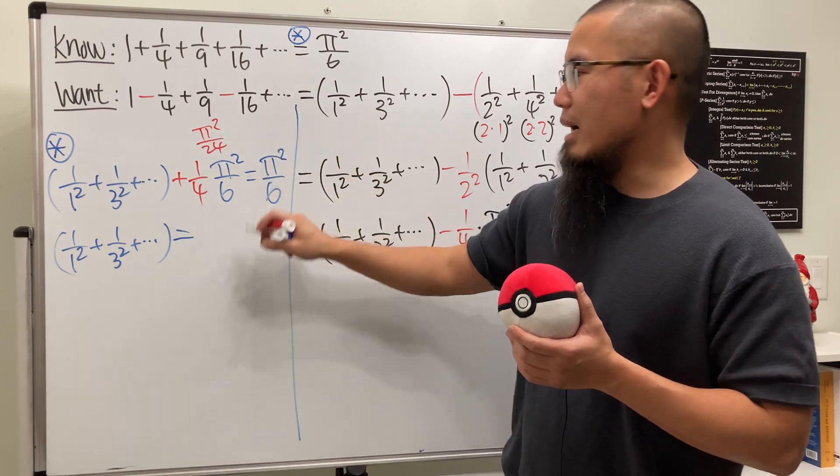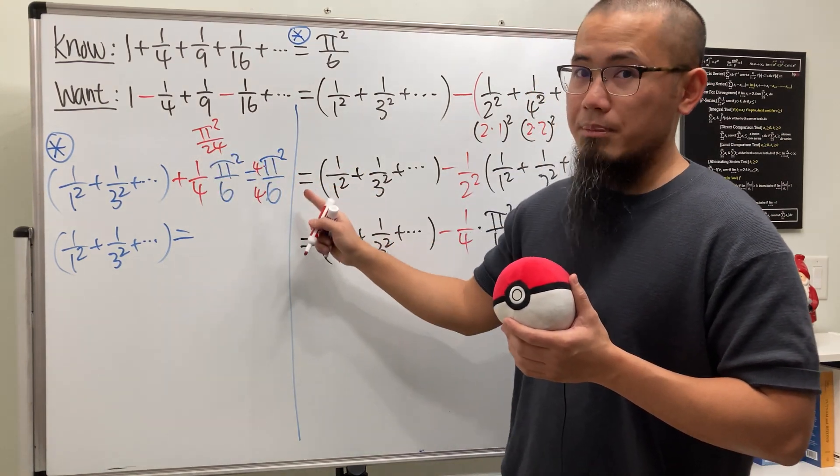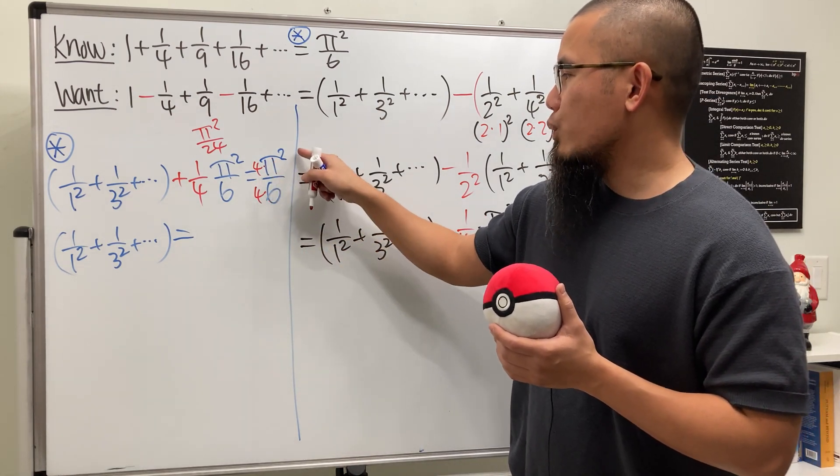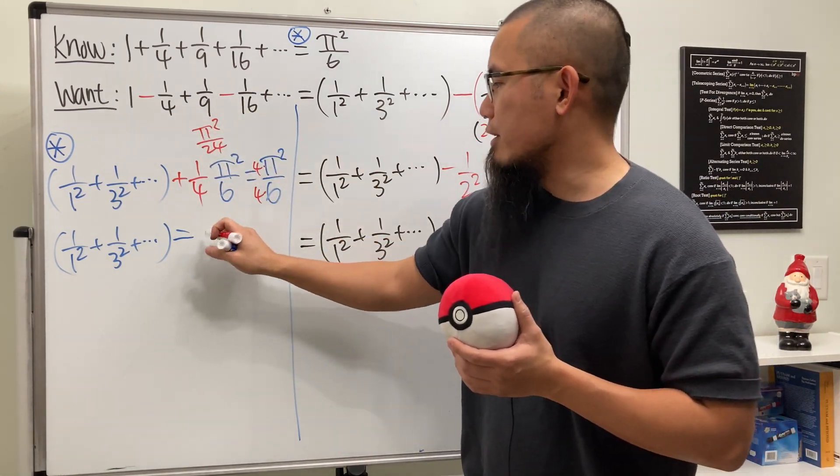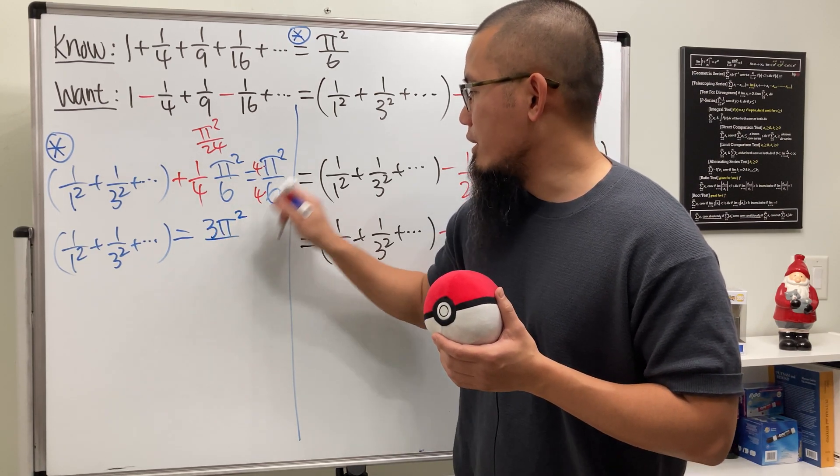And this right here is of course, we get the common denominator, so we can multiply by 4, and multiply by 4, and then minus this on both sides. So 4 pi squared minus the pi squared, we have the 3 pi squared, and then we have that over 24.